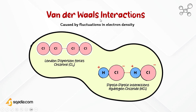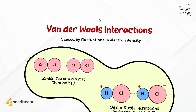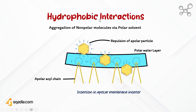Van der Waals interactions are important in drug-receptor interactions because they contribute to the overall stability and binding affinity between the two molecules. They also contribute to the size, shape, and distribution of electron density, which helps researchers optimize the binding affinity and selectivity of the drug for its intended target receptor.